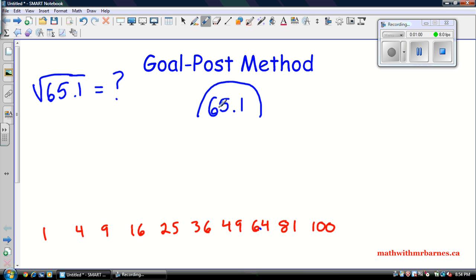So when we're looking at 65.1, we're looking that it's in between these two guys right here. So it's in between 64 and 81. So that must mean that the square root of 65.1 is between the square root of 81 and the square root of 64.